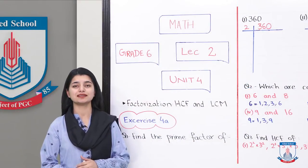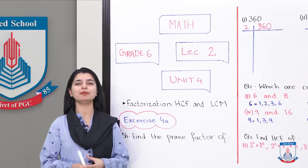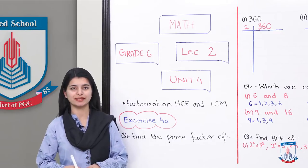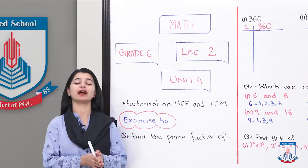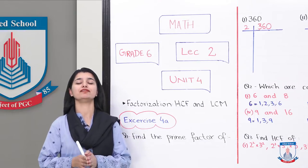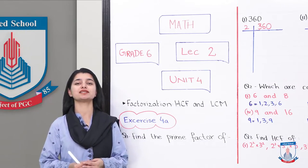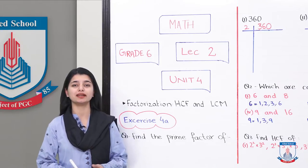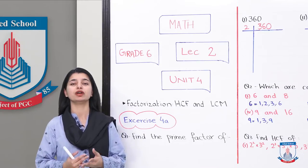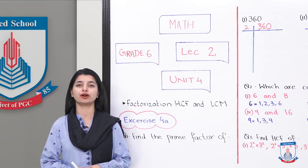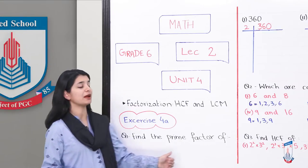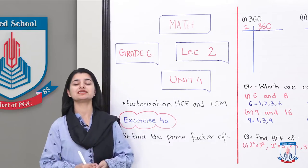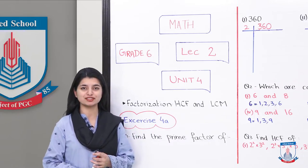After discussing what is factorization, what is prime factorization, HCF can be calculated both from the prime factorization method and the division method. Now we have done exercise 4a so that we can understand and utilize all concepts. If we look at the first question 4a, it says find the prime factors — they have given you certain numbers and you have to do their prime factorization.